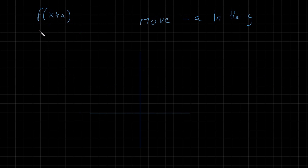Okay the next rule. If we have f of x plus a, so this time the a is inside the bracket. What's important to note here is that we have positive a in the brackets here but our movement is actually negative a in the x direction. So if we had a negative number inside this bracket we would actually move in the positive direction.